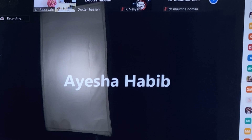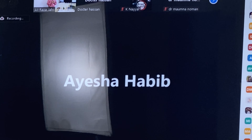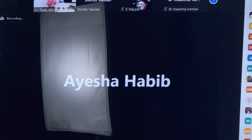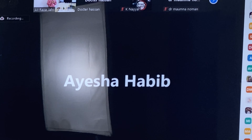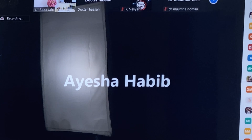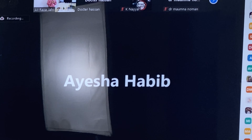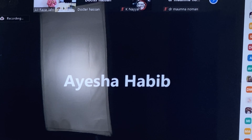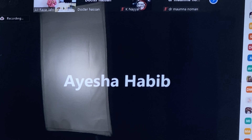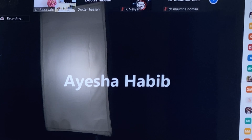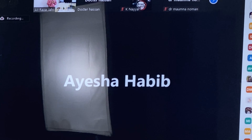When you have all this criteria, simply extract the lower sixth and have a sound sleep — the nature will do the rest. The seventh will take the position of the sixth by itself, and the rest of the occlusion will develop automatically.